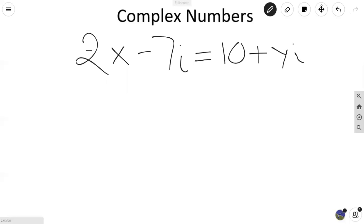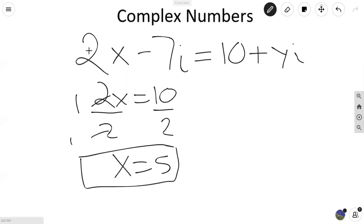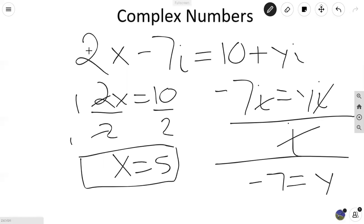So let's make 2x equal to 10 and solve for that. Divide by 2, x is equal to 5. So we satisfy the x value. And lastly, now we'll be doing negative 7i is equal to yi. Now just divide i by each side. Cancel, cancel. And therefore, y is going to equal to negative 7. So that's how we're solving for the particular values using our different equations.